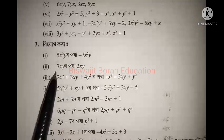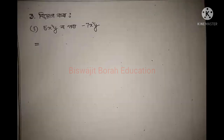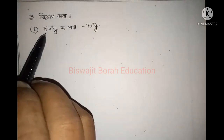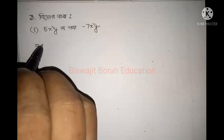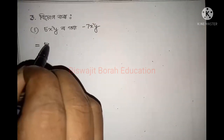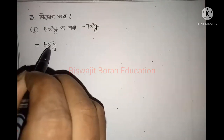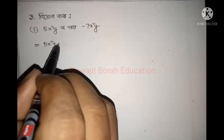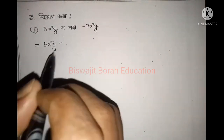We need to write this carefully. First, we will write 5x squared y. Write 5x squared y. Then write it with a bracket. We write inside the bracket, bikkoori, and then write it out.